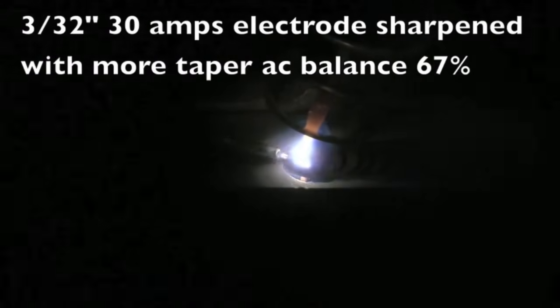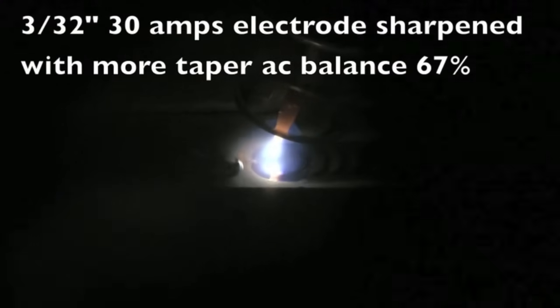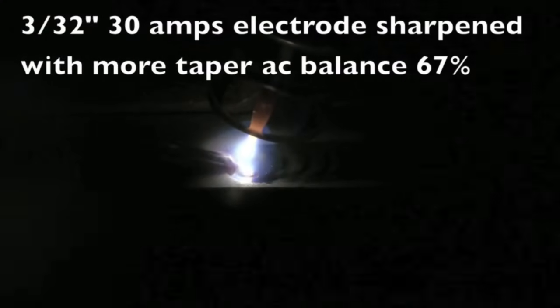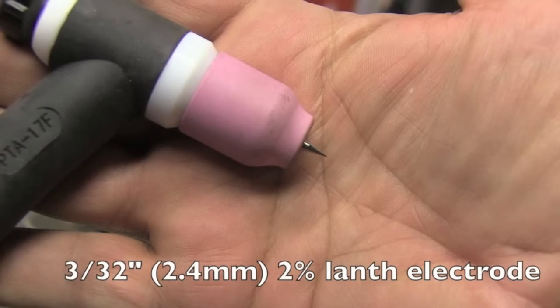But when I sharpened it a little bit more and then reduced the AC balance from 70 to 67, I got a really stable arc that lit up really nicely on the edges at low amperage. Now I don't weld all aluminum with this sharp of an electrode—we'll show a little bit of that later in this video.